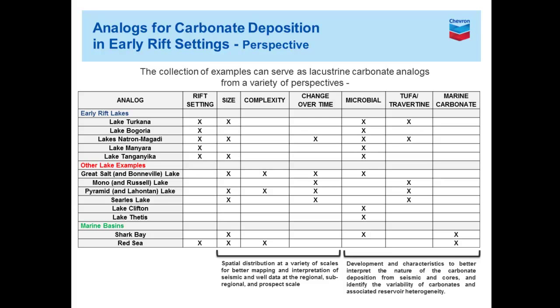The other way to look at this is by scale. For larger-scale mapping, interpretation of seismic, or well data at the regional or prospect scale, you'd focus on the big patterns in lake system changes over time. If you just got a core and are looking at what something is in thin section or image logs, then it's more the detailed characteristics. So if your driver is the big picture or the fine detail, you might pick and choose from these analogs in different ways.